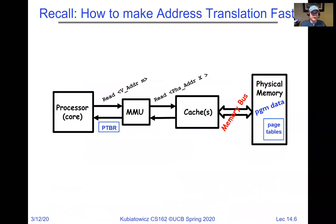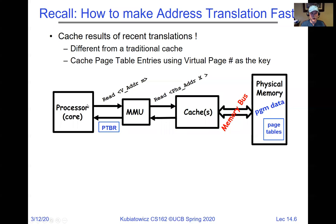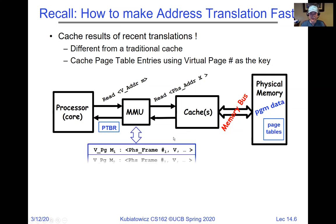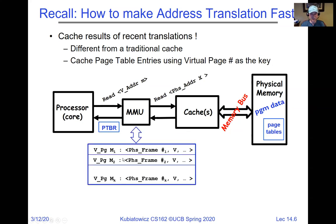How do we make address translation fast? The processor sends reads through the memory management unit, they get translated, sent to the cache, then down to memory. It would be great if, once we've done all the work of translating a virtual page to a physical page, we could cache that translation near the MMU. Then the next time we look for it, it's fast.